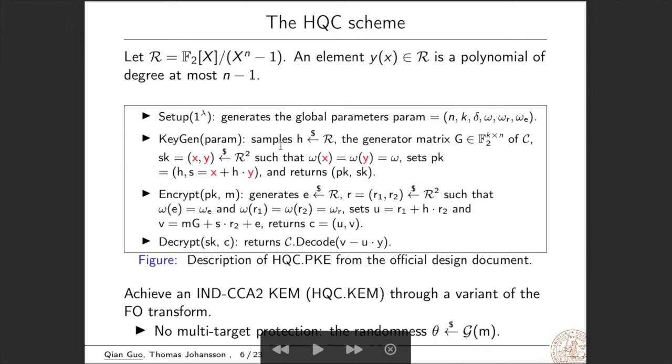For key generation, we sample a random polynomial h, which corresponds to the generator matrix of the code. So for secret key, we generate two random polynomials from R, which is x and y with low weight w, and we set public key as h and s and return public key and secret key.